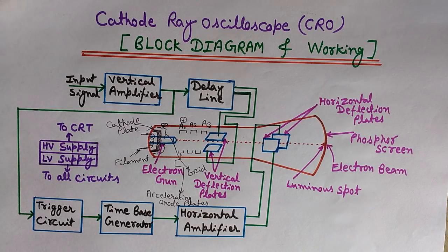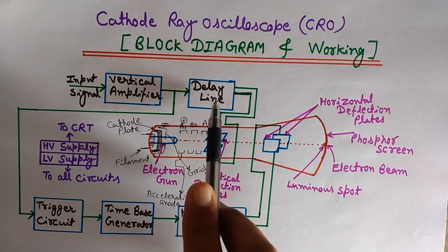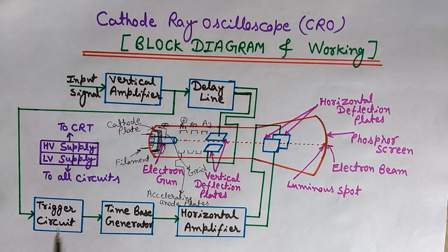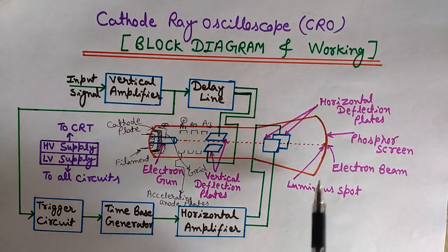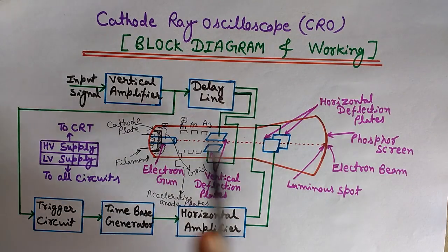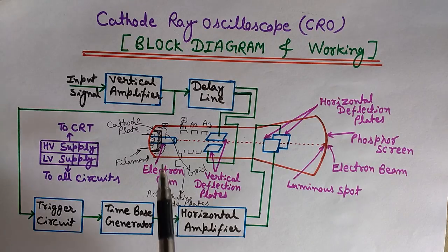Before starting, let me name the main components of this CRO. This is the vertical amplifier, delay line, trigger circuit, time base generator, horizontal amplifier, and this in red is the cathode ray tube — the CRT. It is the main part of the CRO, therefore it is known as the heart of the CRO.